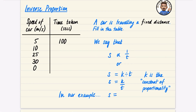In this video I'm going to be covering inverse proportion. If you haven't watched the one on direct proportion before this, you should definitely go and watch that because it's going to have lots of the same ideas. In direct proportion we talked about the speed of a car and the distance it was traveling. This time I'm going to talk about the speed of a car and the time taken to travel a fixed distance. For direct proportion, if you doubled the speed you would double the distance. Let's see what happens with speed and time — if you double the speed from 5 to 10, you would halve the amount of time.